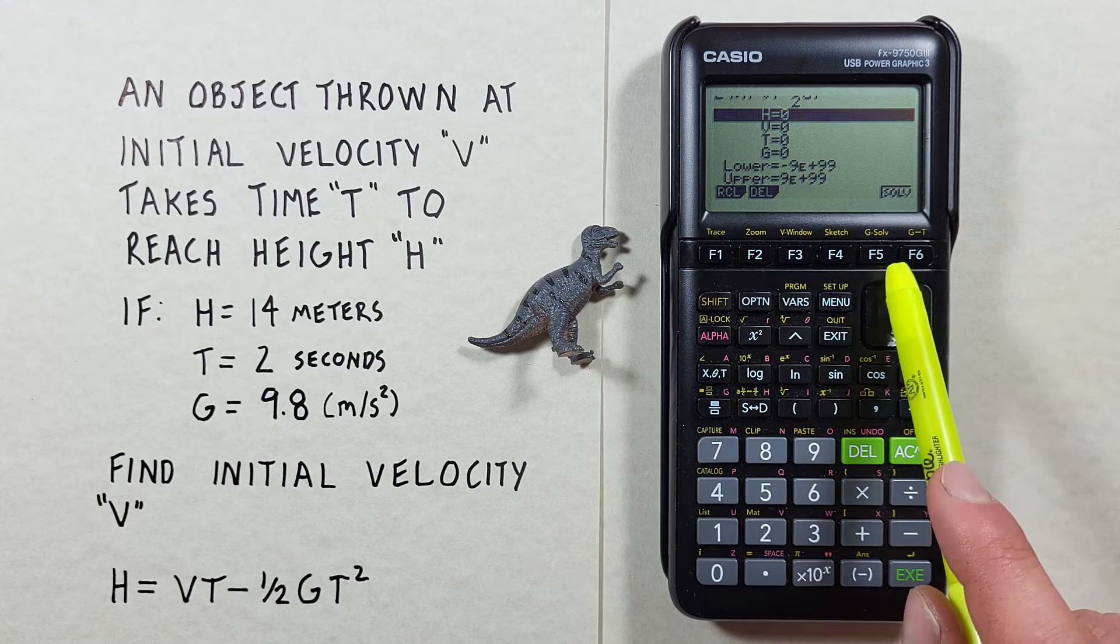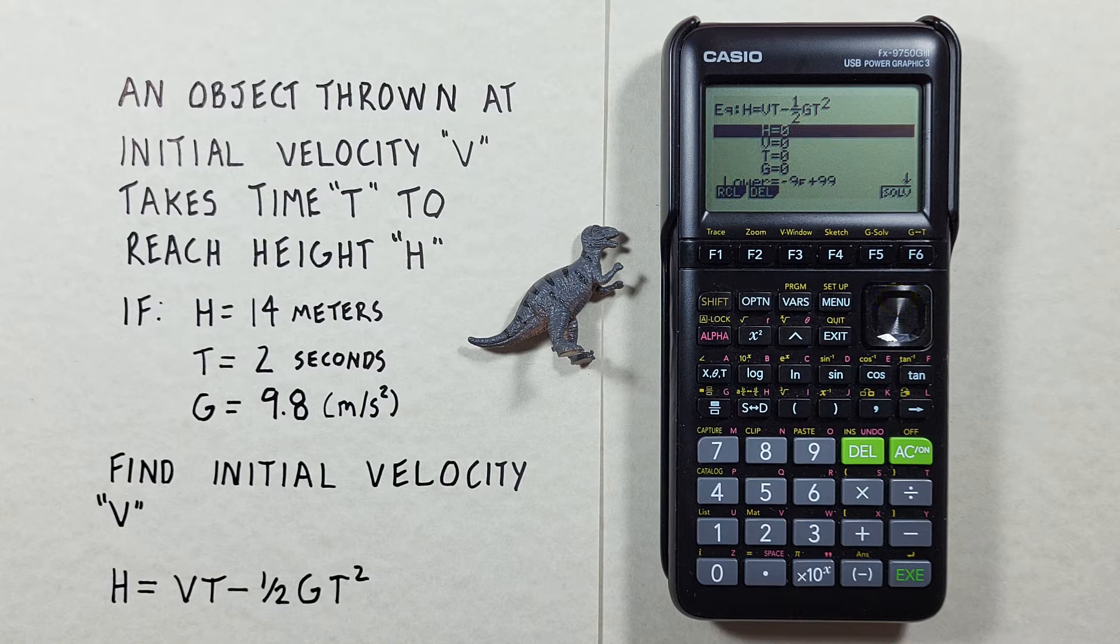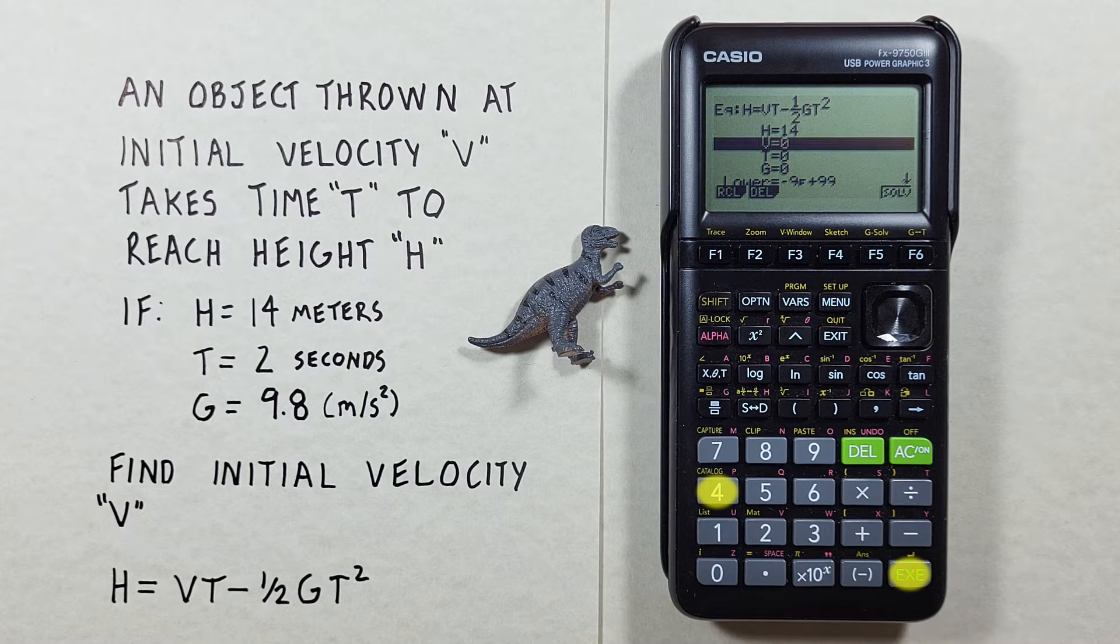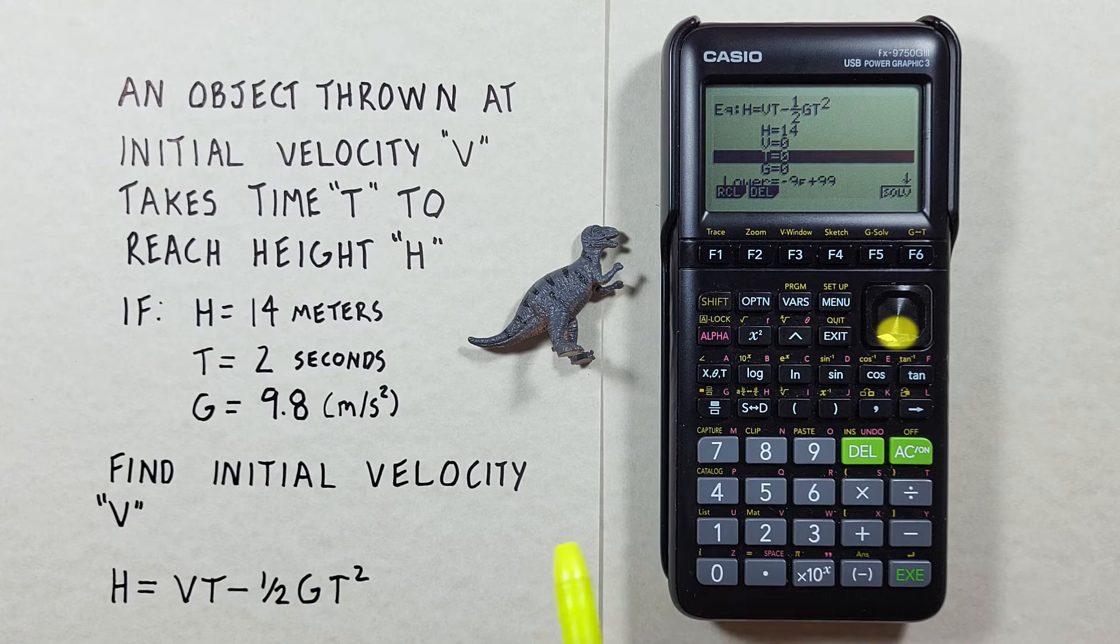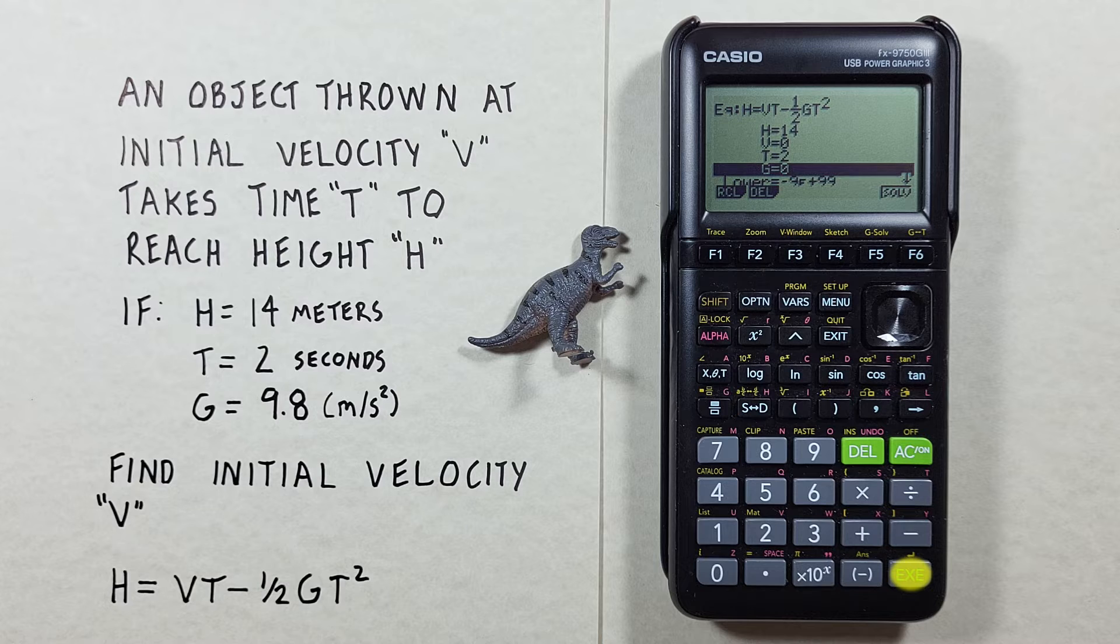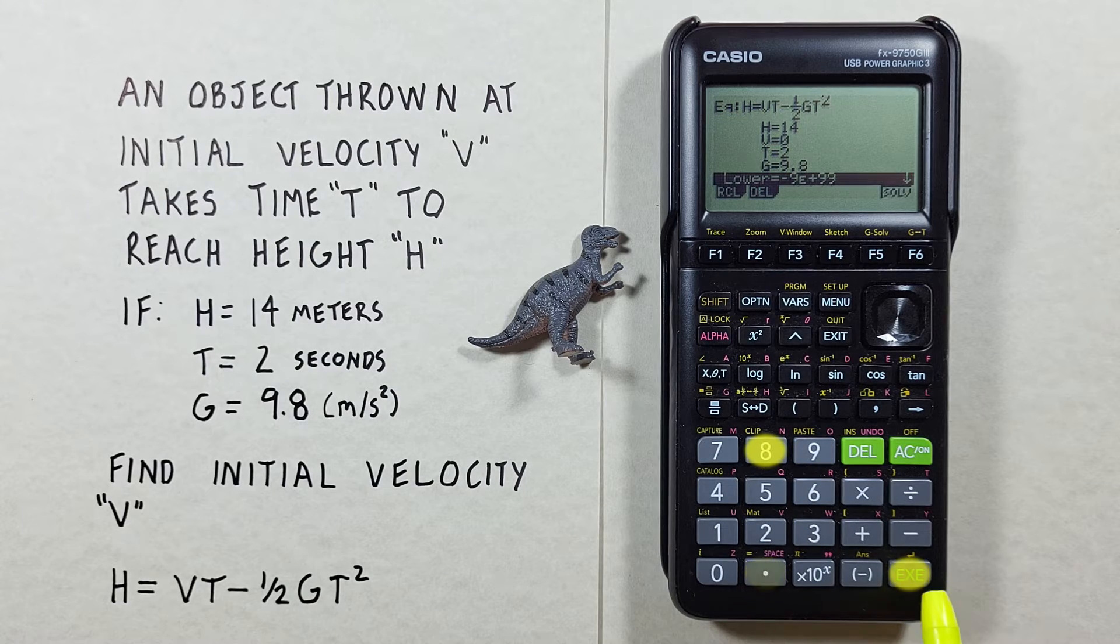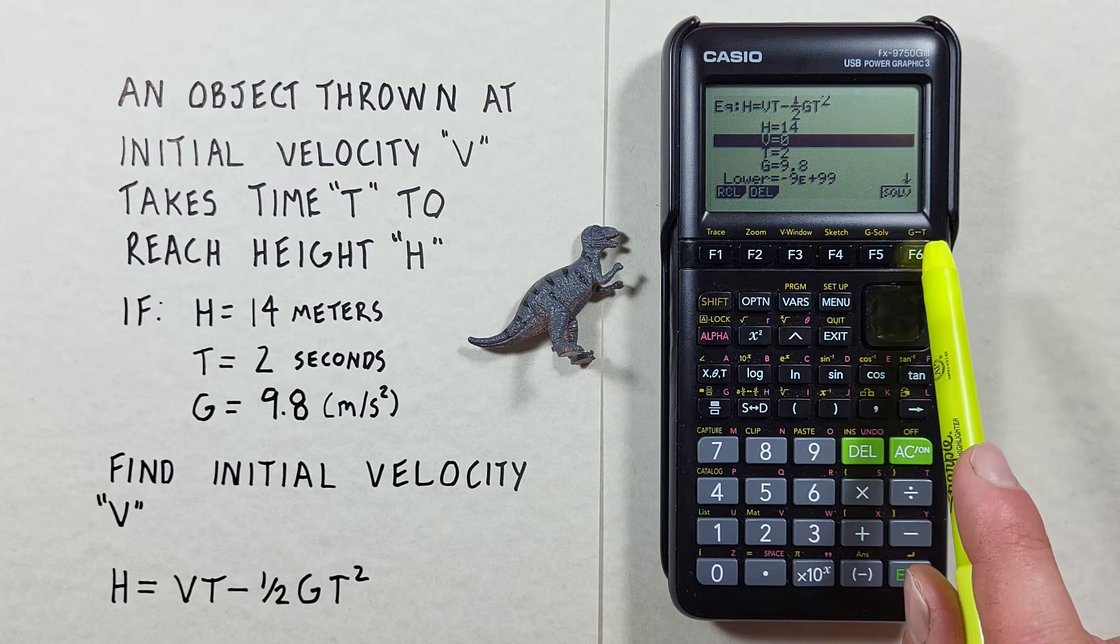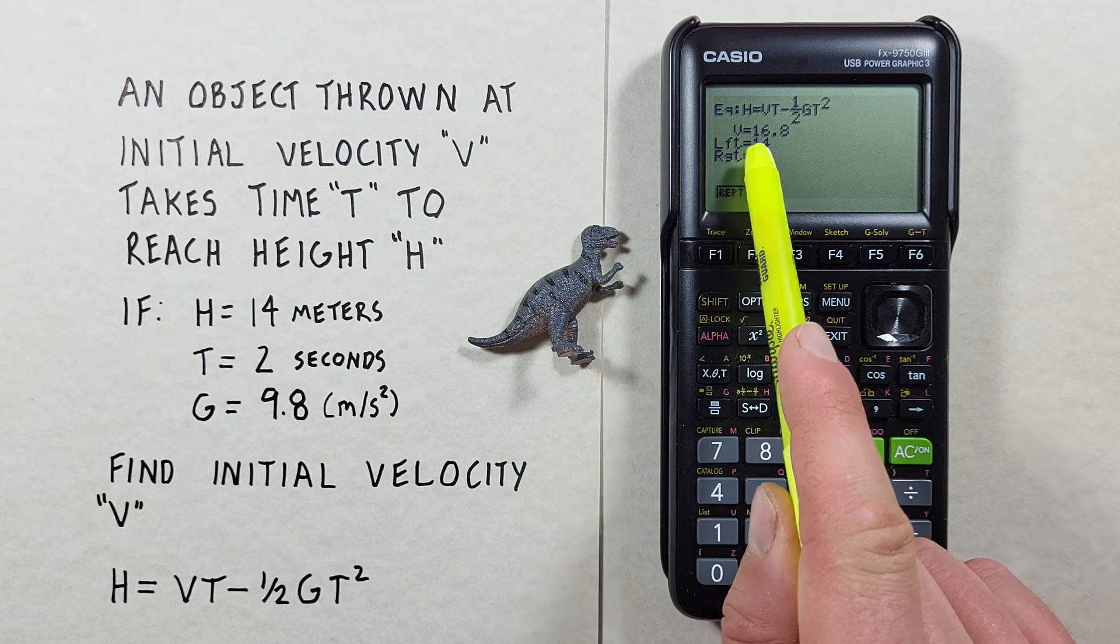And there we go, there's our formula and here's all our variables. And we can go ahead and enter those now. So we know h is equal to 14, EXE. Our v is our unknown, that's what we're trying to solve, so we can leave that. Our t is 2 seconds, so we can hit 2, EXE. And then our g was 9.8, EXE. And then all we have to do is scroll up to our v and hit solve F6. And there we go, our initial velocity is 16.8.